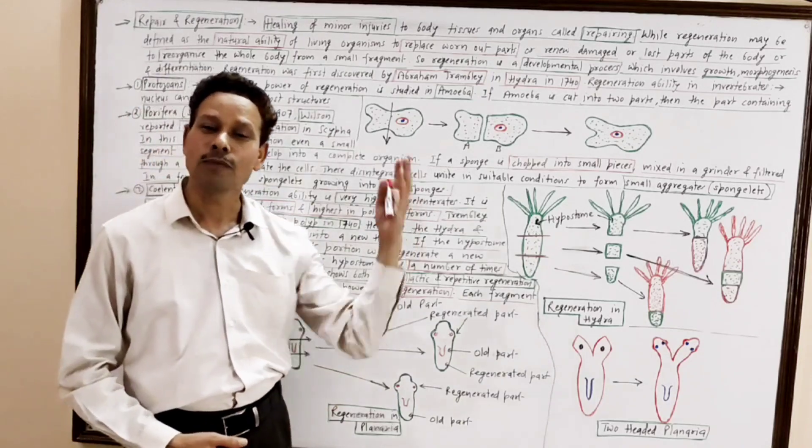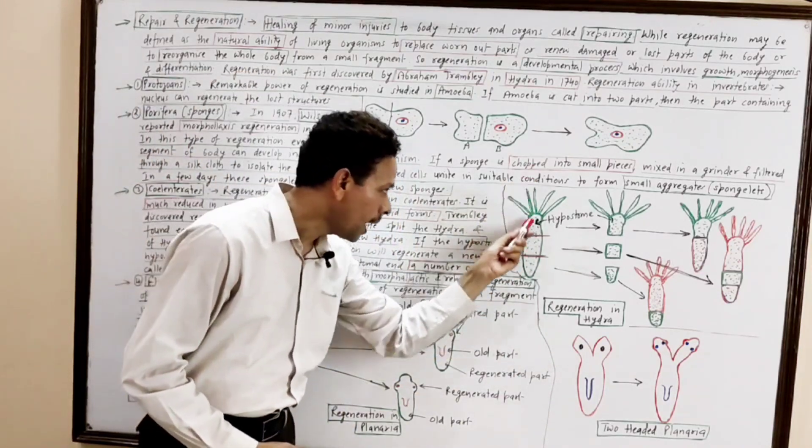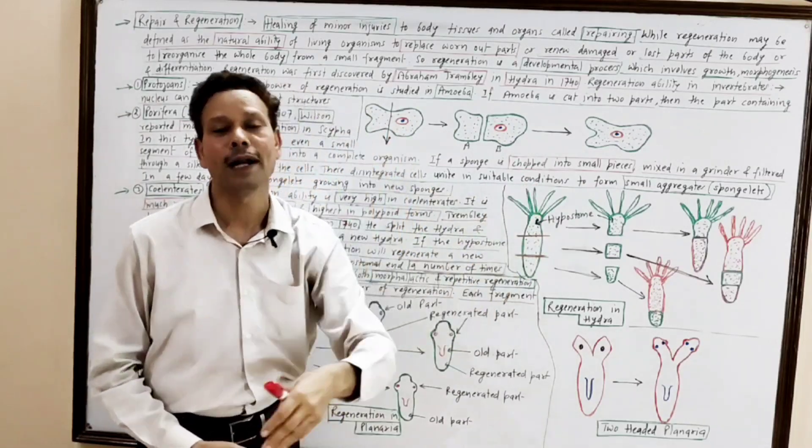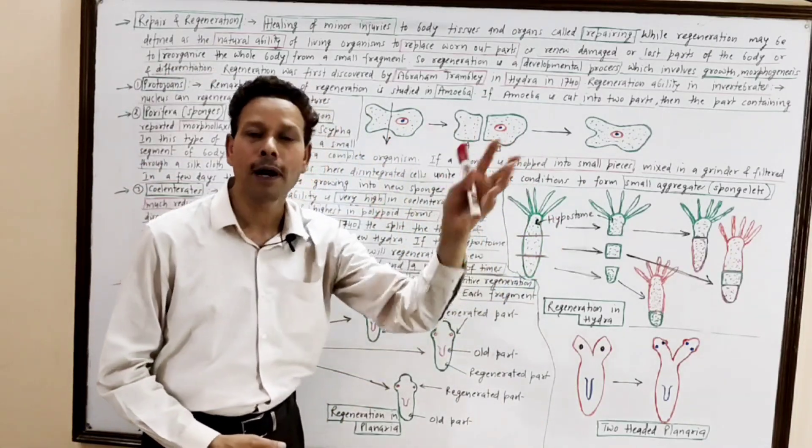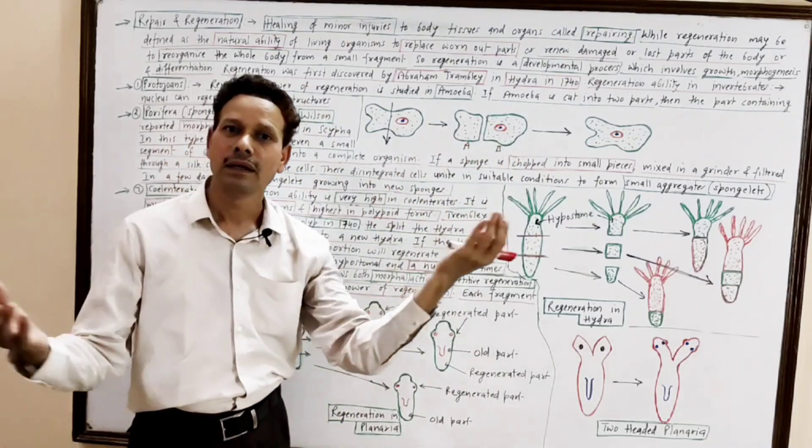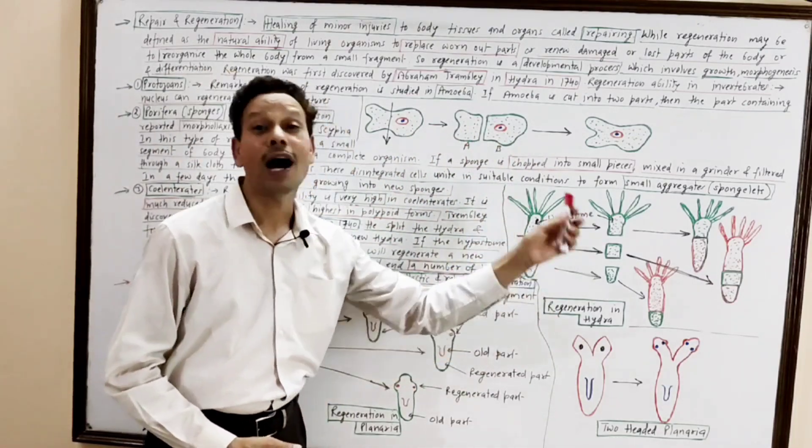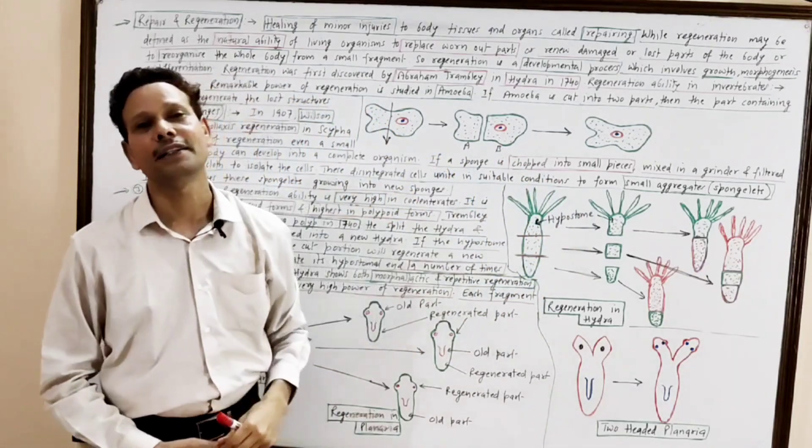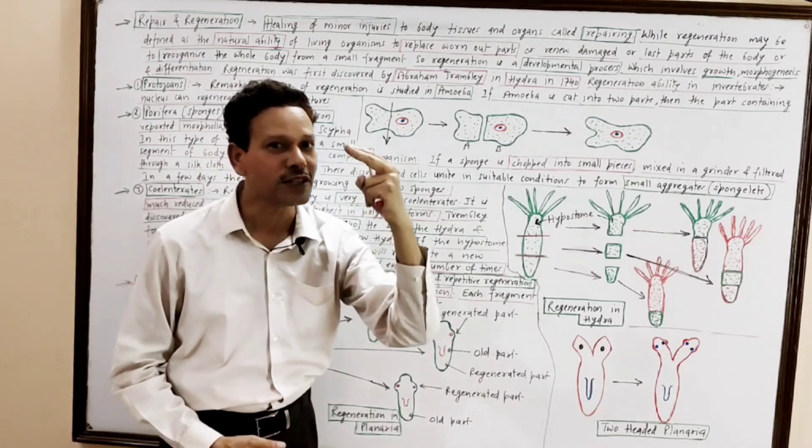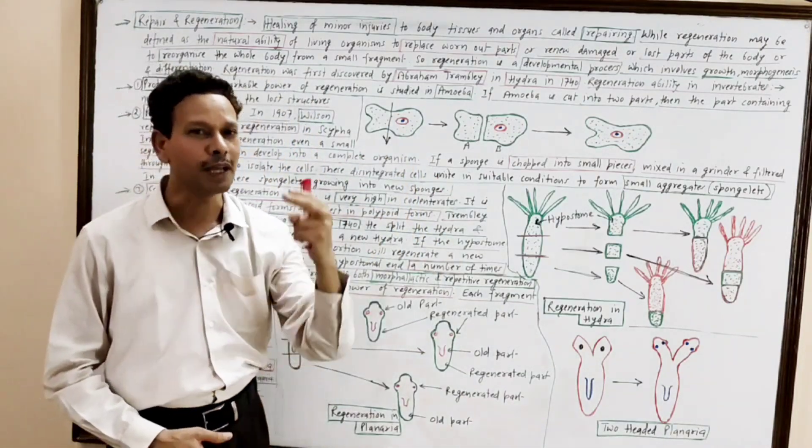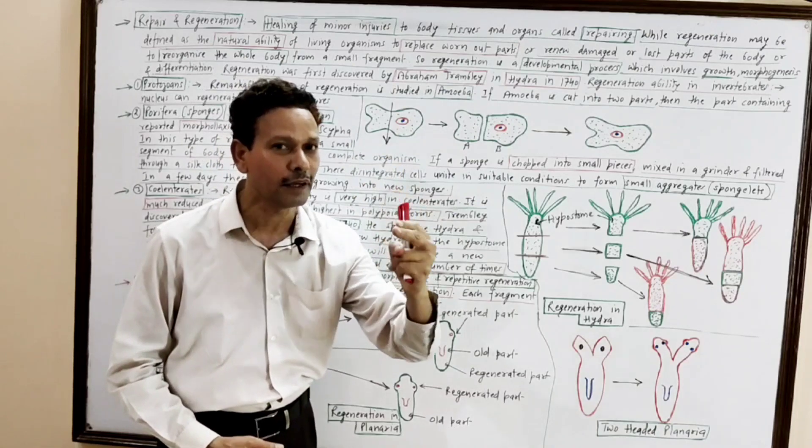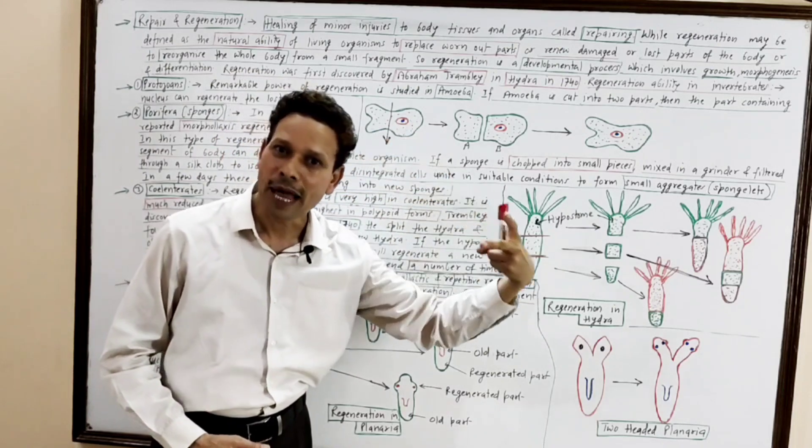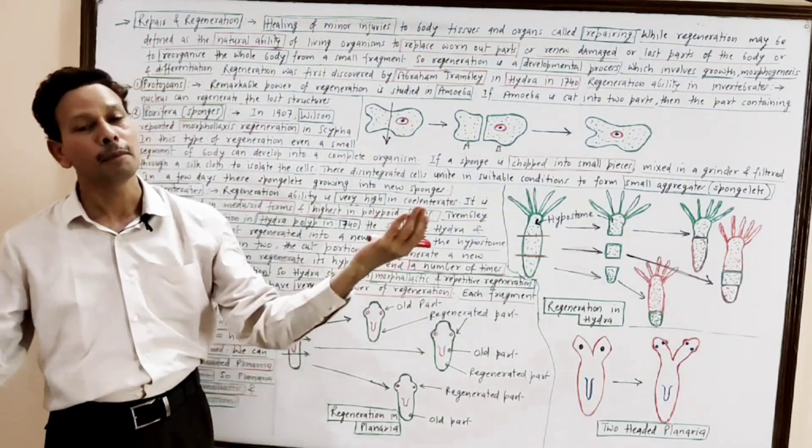As well as, he observed that if this hypostomal end is cut into two parts, each hypostomal part capable to give rise a new hypostome. It means hydra becomes two-headed. That kind of regeneration is repetitive regeneration. It means in case of hydra, in case of polyp, cnidarians, both morpholactic and repetitive regeneration are important.